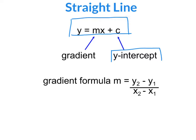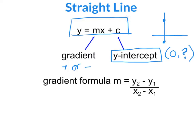Your y-intercept — to recap what that means — is where the line cuts the y-axis, and that will be given as a coordinate of 0, something. Any coordinate on the y-axis is along 0, up something or down something. Your gradient is a measure of how steep a line is. It can be positive or negative. A positive line slopes up the way, and a negative line slopes down the way as you work left to right, the way you would read a page.